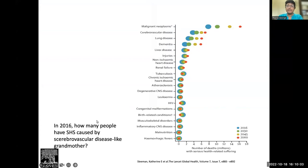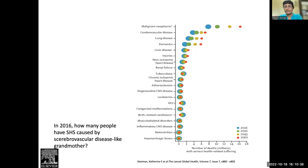Then show them a graph that illustrates a whole range of conditions associated with serious health-related suffering — neoplasms, vascular, organ failure, trauma, infection, metabolic. It's not just cancer and not just elderly care. In 2016, cerebrovascular disease alone caused almost four-and-a-half million deaths with serious health-related suffering. So we introduce both the spectrum and the magnitude of serious health-related suffering.